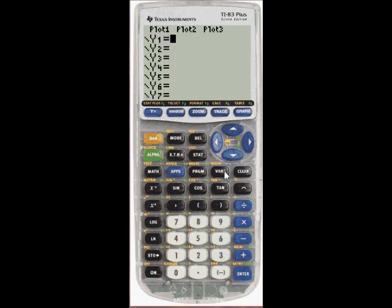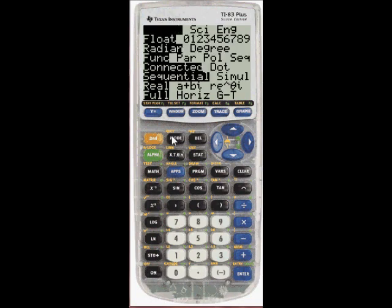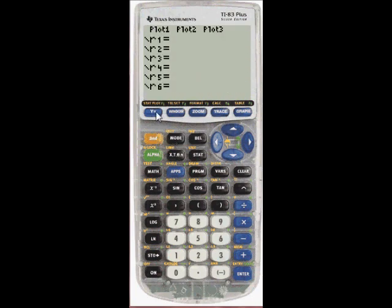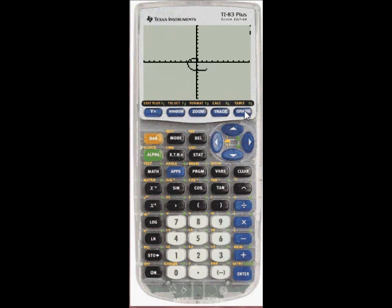I'm going to go to y equals. Clear this out. Quit. Let's graph in polar coordinates. So I'll go to mode. Right now I'm in function. Parametric is here. Polar and sequential. I want polar. So I'll select polar. Quit. Y equals. Now it gives me the r equals. So I'll do 0.5 theta. And you notice that this button automatically changes to theta instead of x once you change modes. And graph.